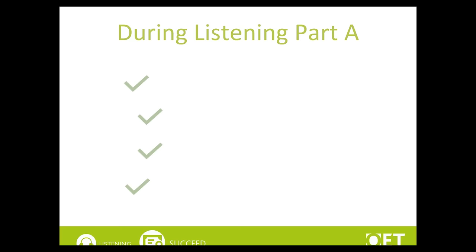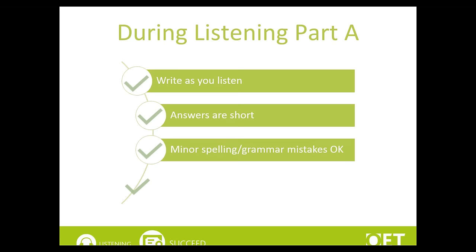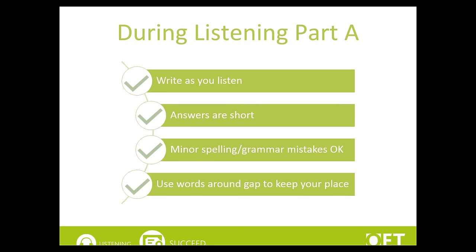To make sure you get the best possible result on test day, here are some final tips for listening Part A. Make sure you write as you listen — you only hear the recording once, so you need to have your answers written down by the end of the audio. The answers you need to write down are short, around one to three words. Minor spelling and grammar mistakes are acceptable — provided the assessors can understand your meaning, these mistakes won't be penalised. Use the words around the gaps to help you keep up with the recording and to give you clues about the information you are listening for.